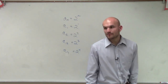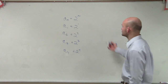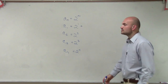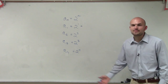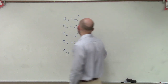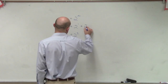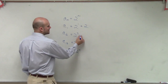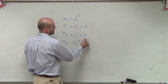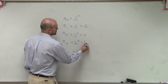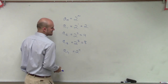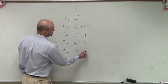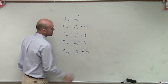Now evaluating this, we just need to remember what exponents represent. 2 to the first power means 2 multiplied by itself one time, equals 2. 2 squared: 2 times 2 is 4. 2 times 2 times 2 equals 8. And 2 times 2 times 2 times 2 equals 16.